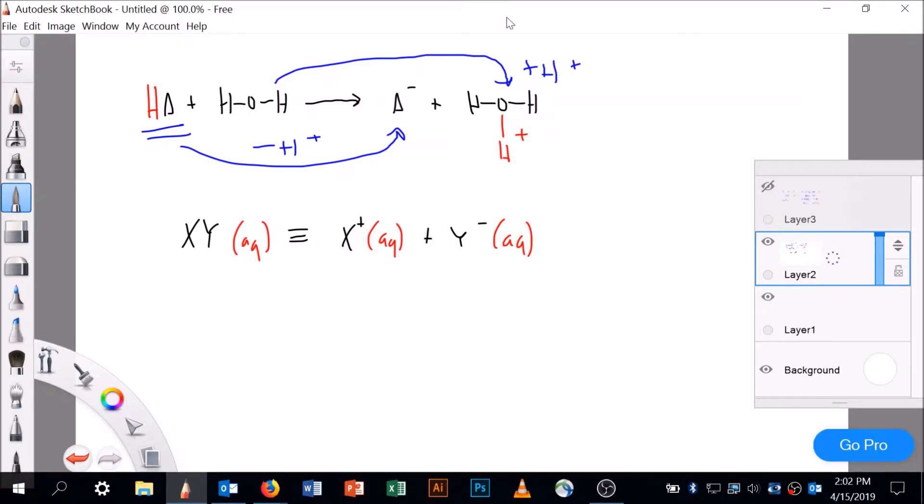The other definition I want to review before we get into this is what is meant by a binary ionic compound. So if you have XY and it's in solution, it's in water, then what it really means is you've got a cation which is dissolved in water and an anion which is dissolved in water, X minus.